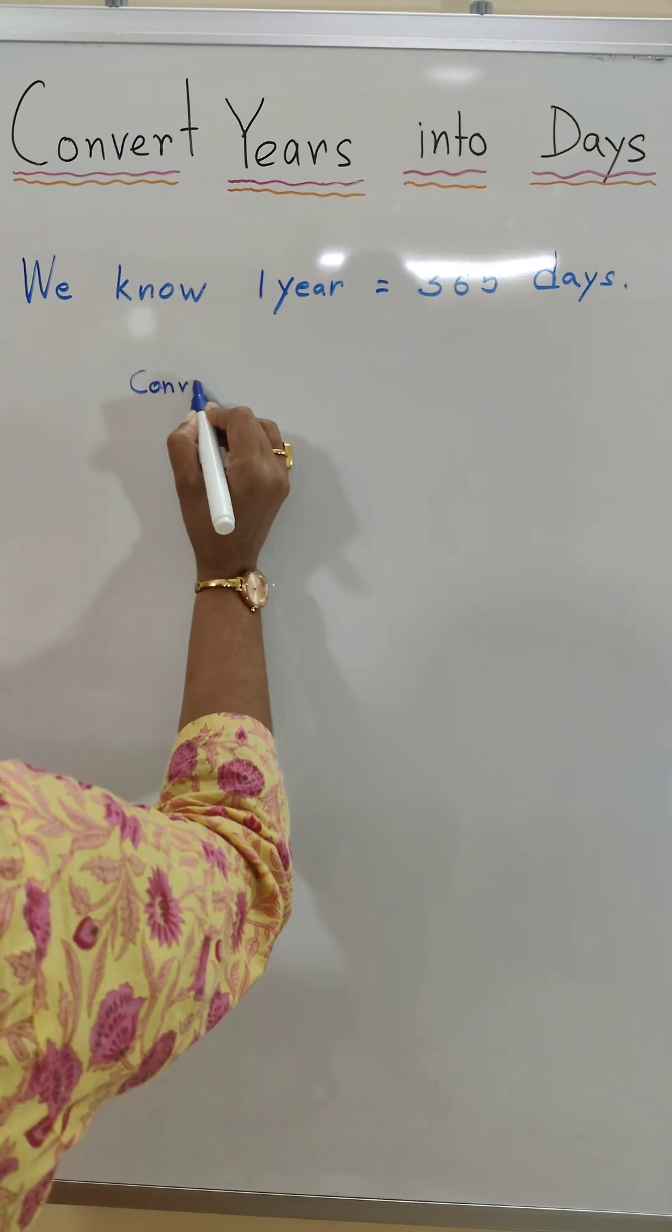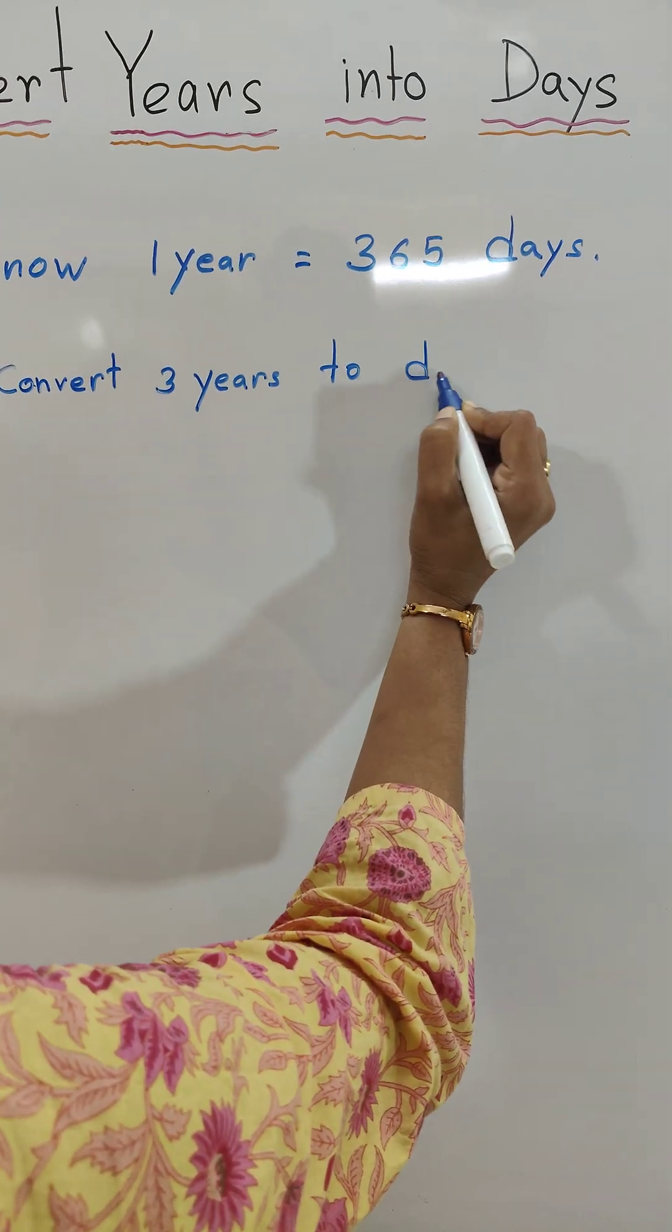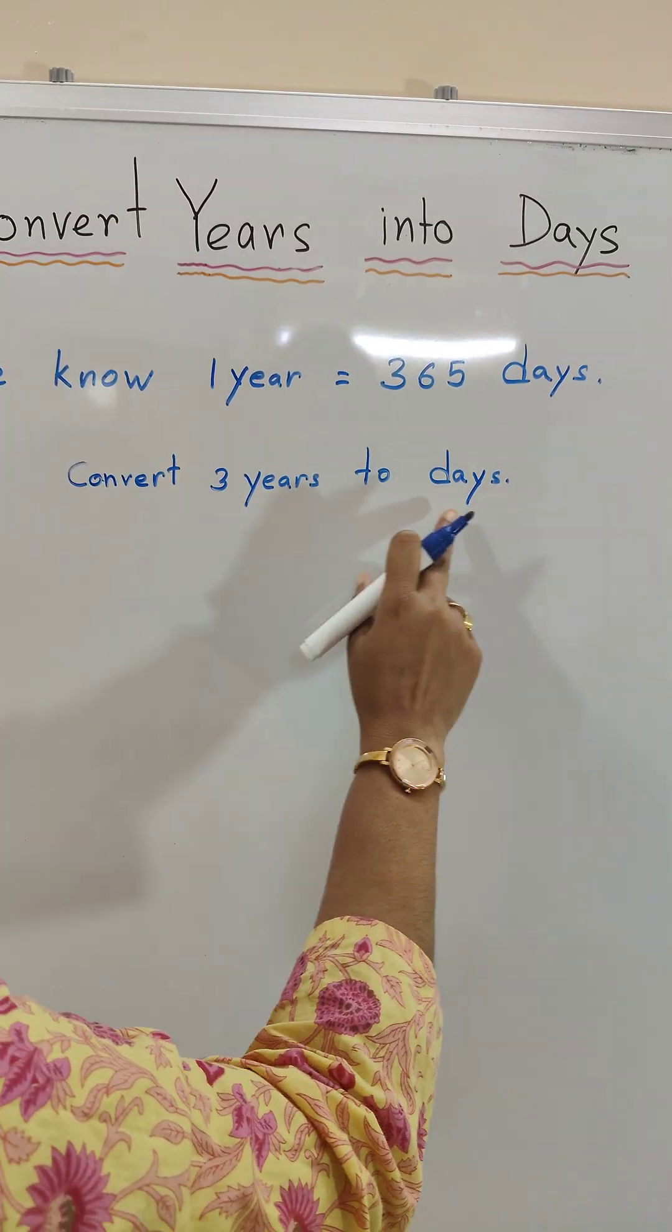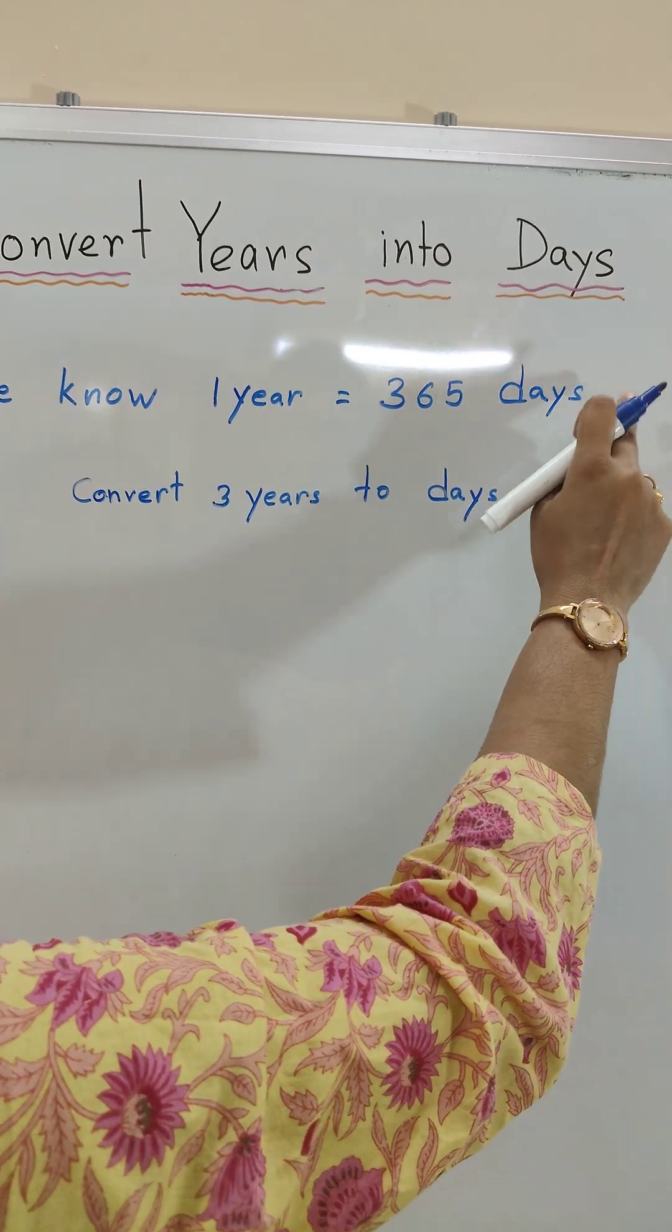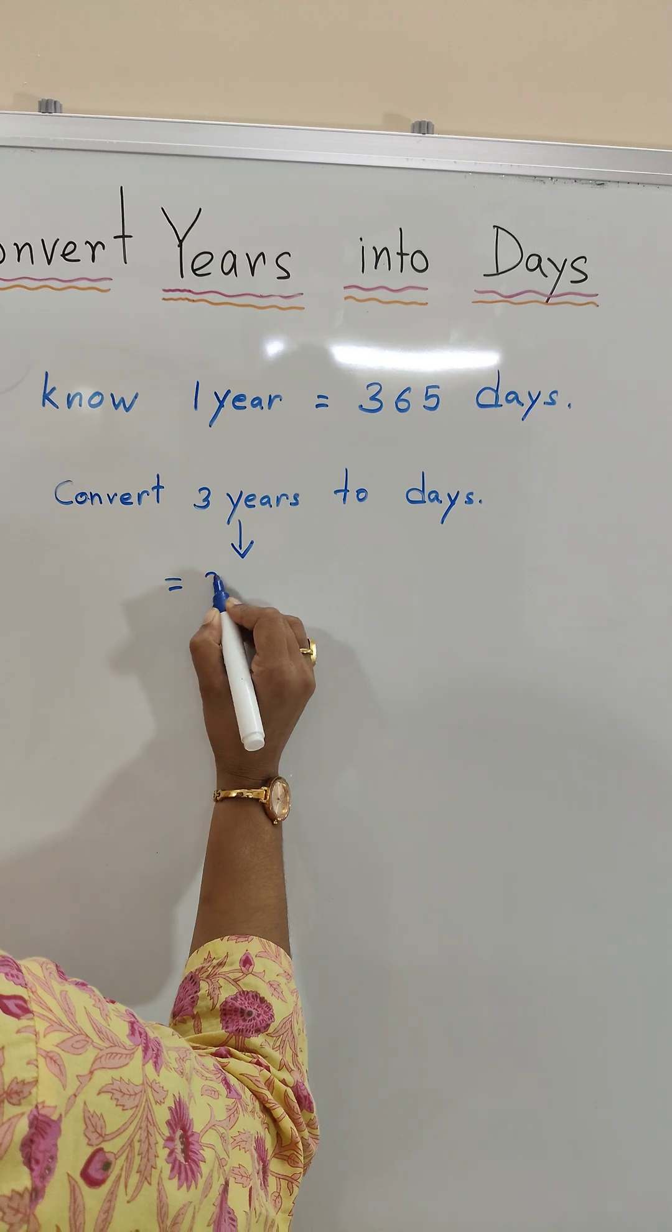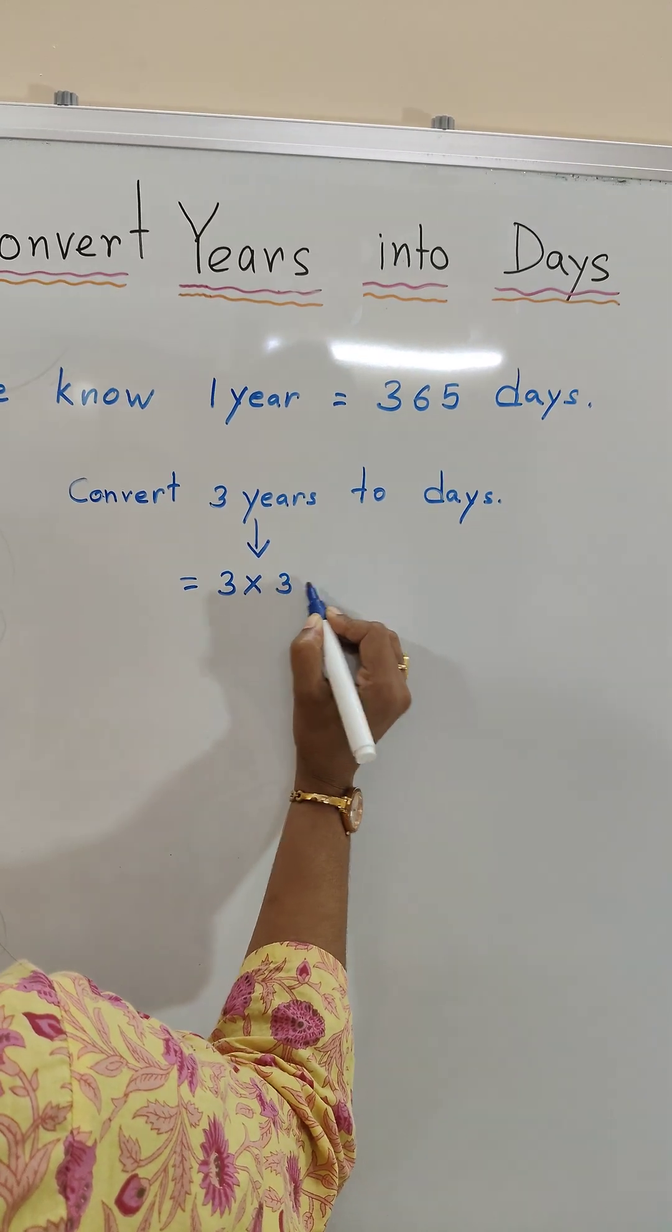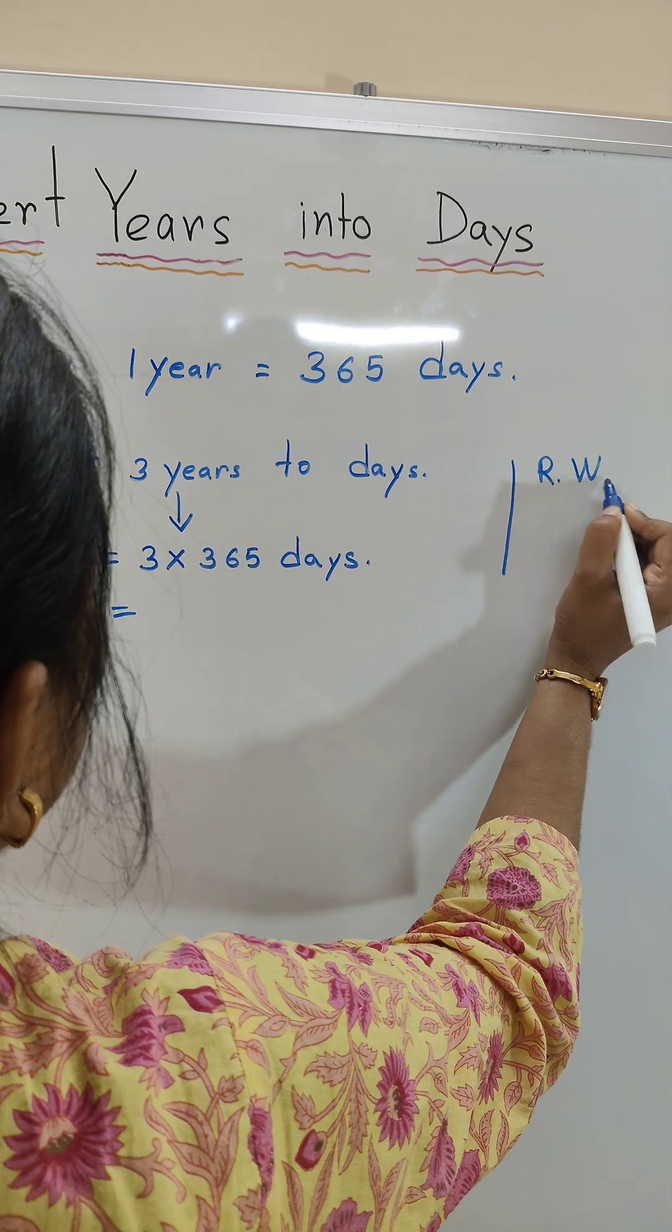For example, convert three years to days. To convert three years to days, we know one year is equal to 365 days. So three years is equal to three times 365 days. Let us do the rough work.